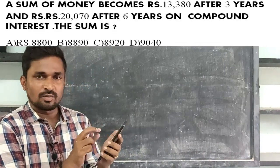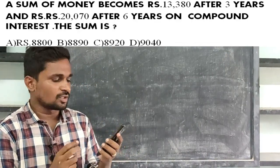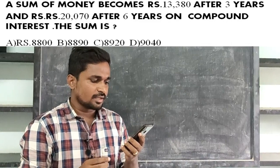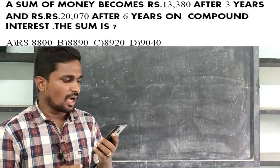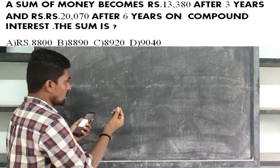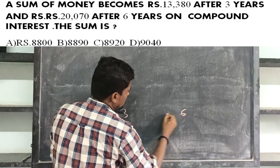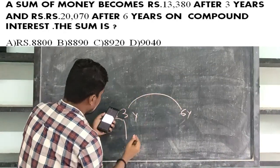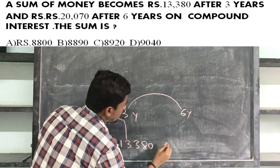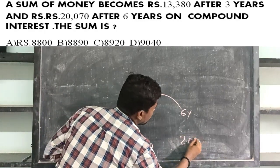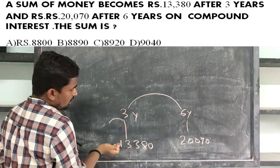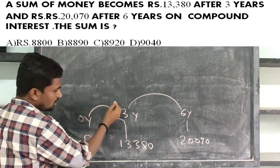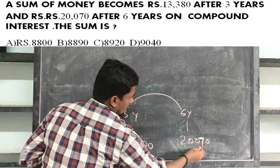Now let's start with the components. The sum of money is Rs.13,380 after 3 years and Rs.2,070 after 6 years on compound interest. Look at the 3 and 6 years. The number of funds is Rs.2,070. Nearly 1 year is added to the number of funds. That's a different amount. You can be ready for 4 worth. But it is simple.